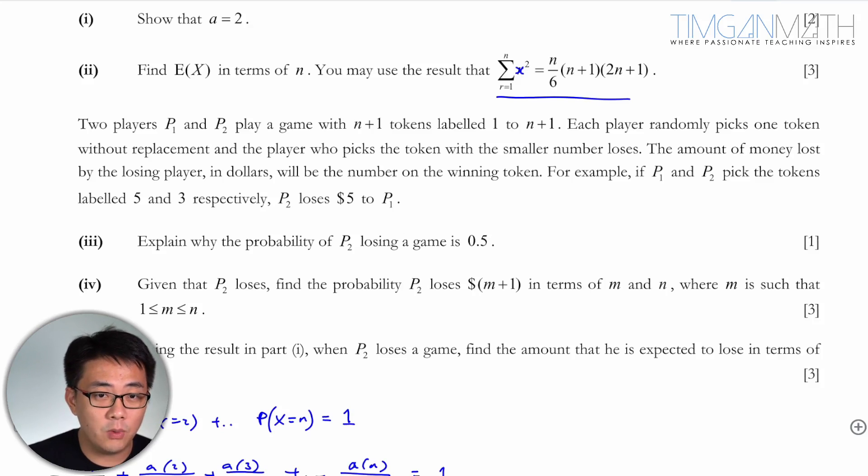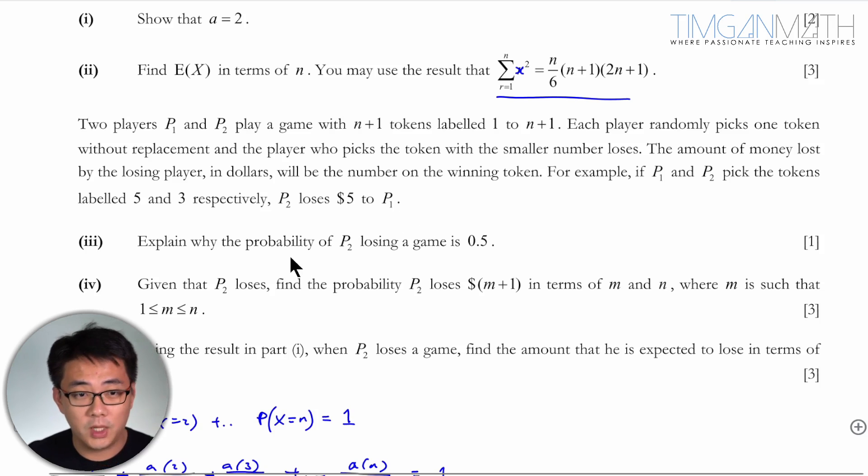So let's look at part 3. Two players P1 and P2 play a game with N plus 1 tokens labelled 1 to N plus 1. Each player randomly picks one token without replacement and the player who picks the token with the smaller number loses. The amount of money lost by the losing player in dollars will be the number of the winning token. For example, if P1 and P2 pick the tokens labelled 5 and 3, P2 loses $5 to P1.